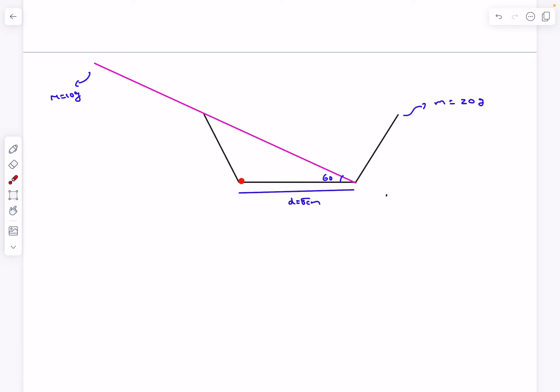In this problem, by basic intuition we can see that when the structure is about to turn over, it will turn about this particular point. Let's call the point O. All we have to ensure is that the net torque of the entire system above point O is zero, because when it becomes non-zero is when the system is about to rotate about point O.